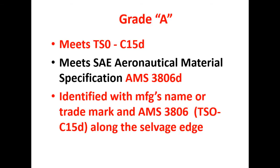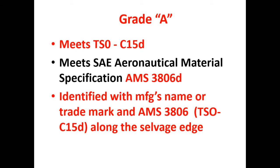Grade A fabric must meet TSO C15D or AMS standard 3806D. Fabric that meets this TSO will be identified with the manufacturer's name or trademark and either AMS 3806 or TSO C15 delta, or both, along the selvedge edge. Polyester fabric is now included in TSO C15D as well.